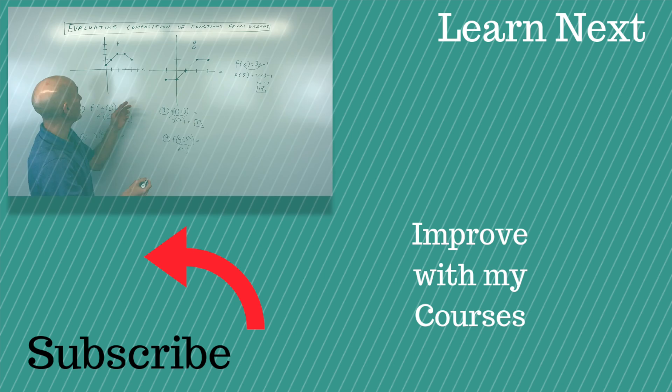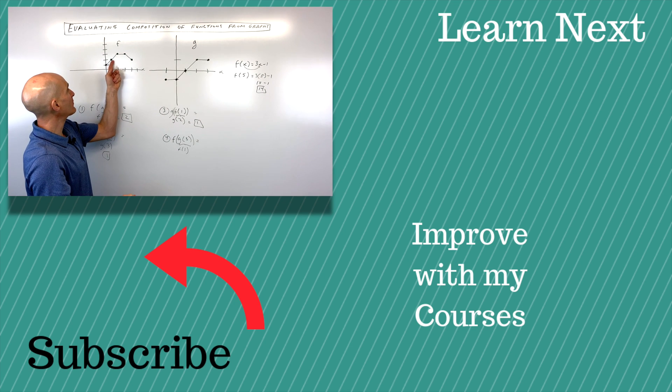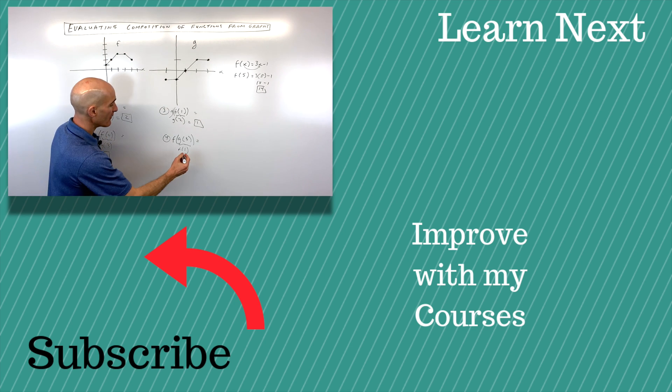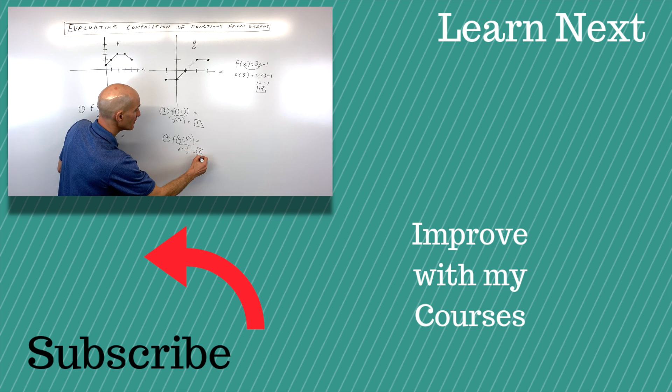Now we just have to find out what's f of 1. Well, when x is 1, we go up to the graph. You can see that the y value is equal to 2, and you've got it.